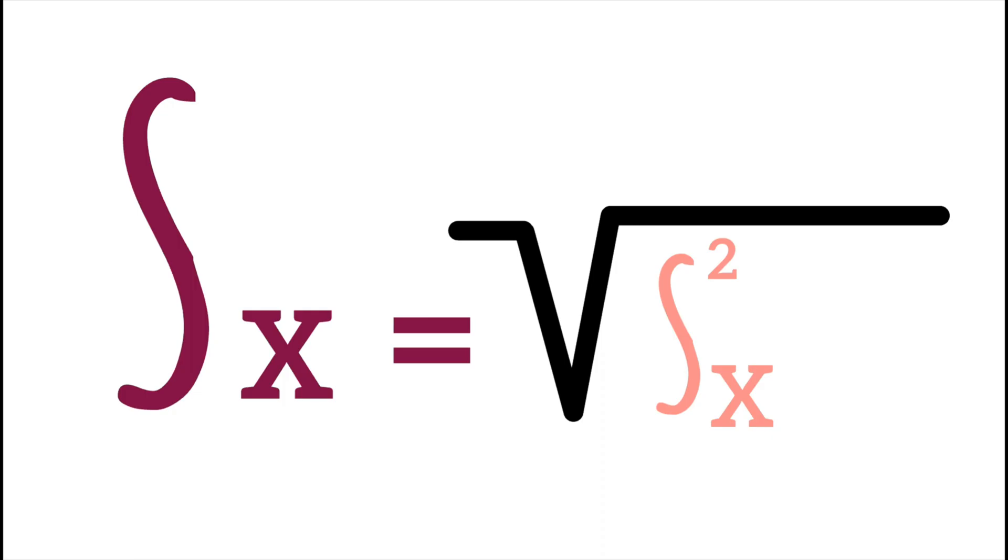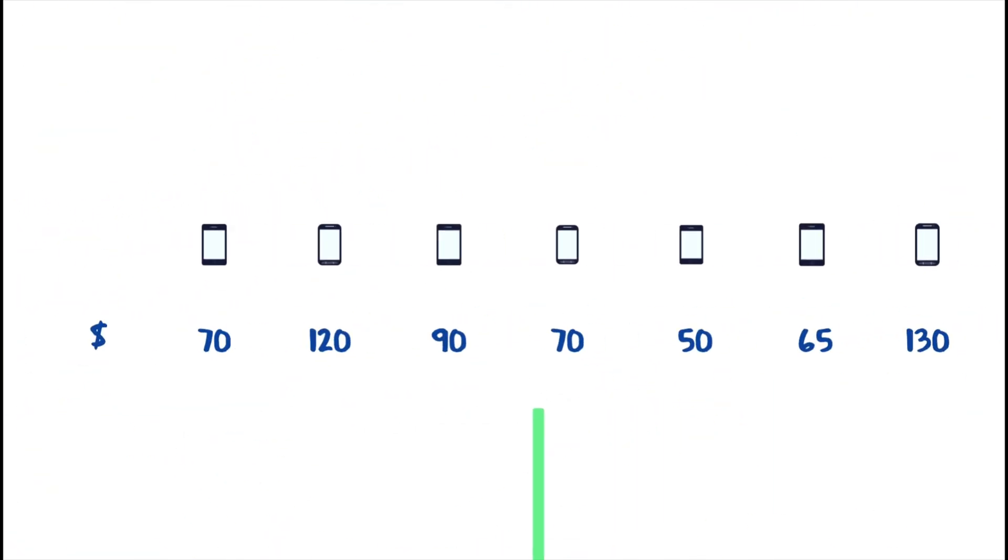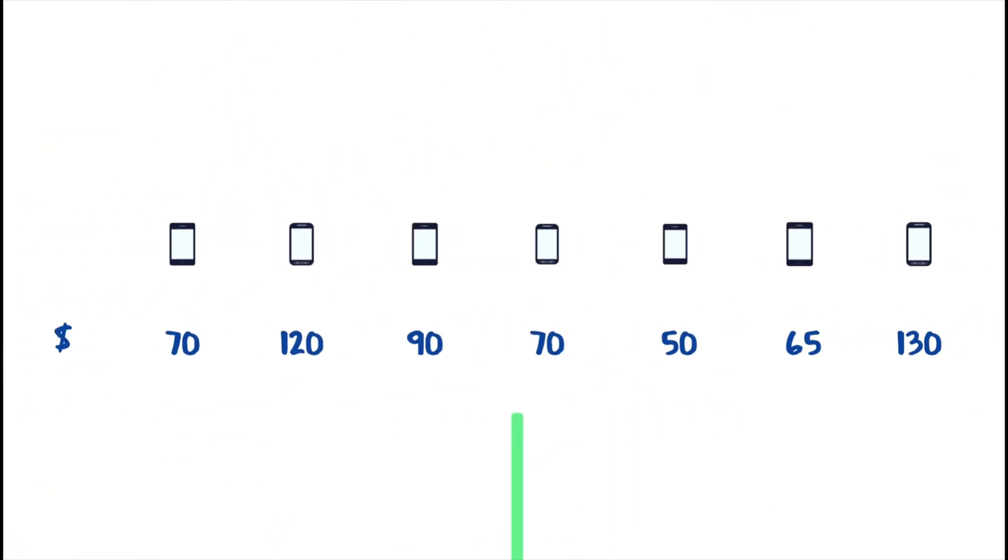Now let's consider the following statistical series. We have seven different used smartphones being offered at different prices. We will now examine the spread of the prices using variance and standard deviation.